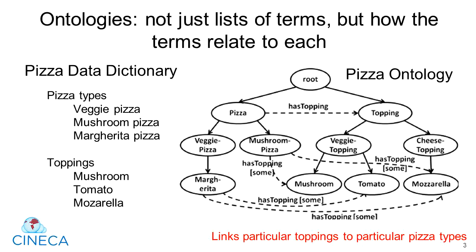In our previous videos, we described how ontologies are sets of controlled vocabulary, where every term has a clear definition and is assigned a unique identifier, and all the terms are linked together with logical relationships.